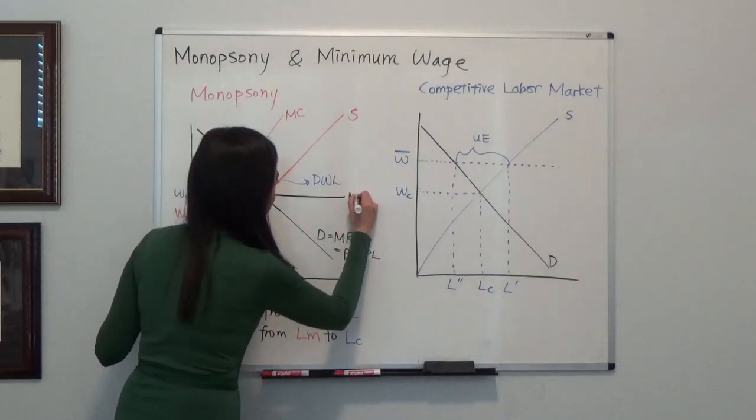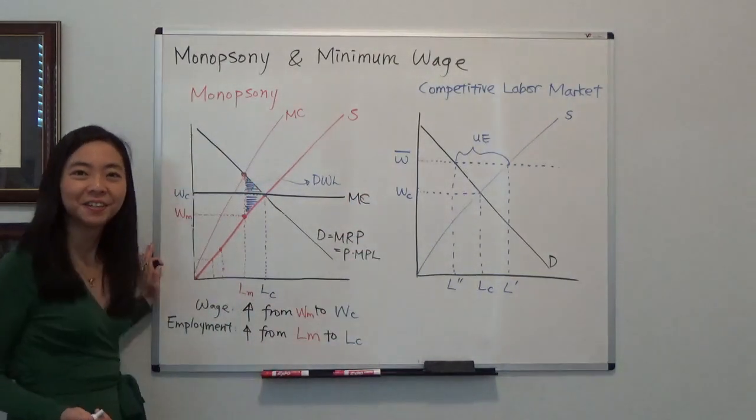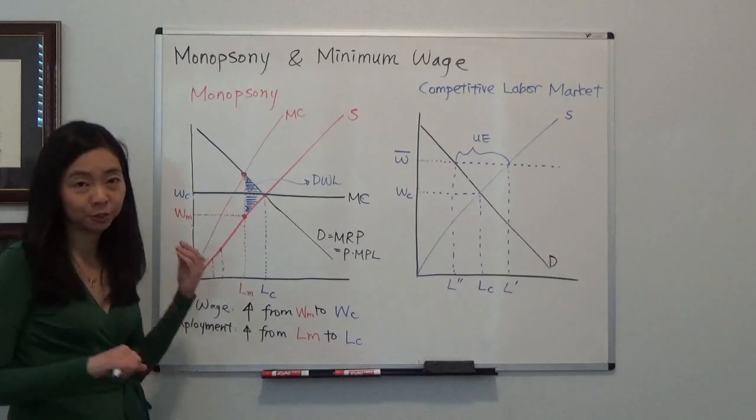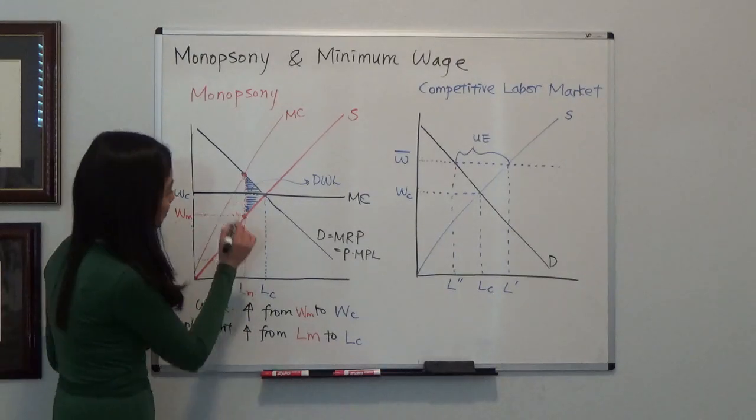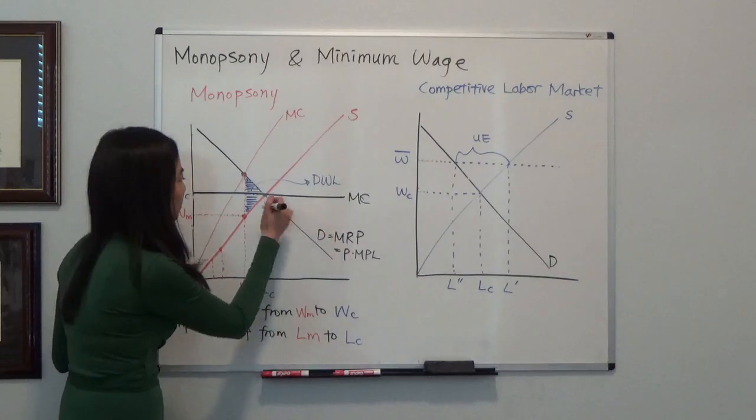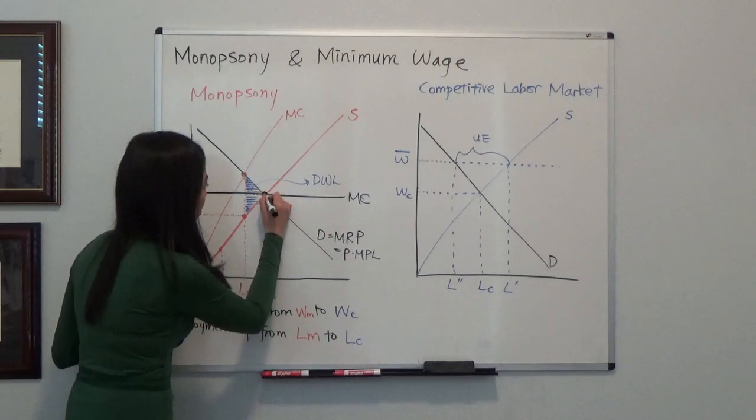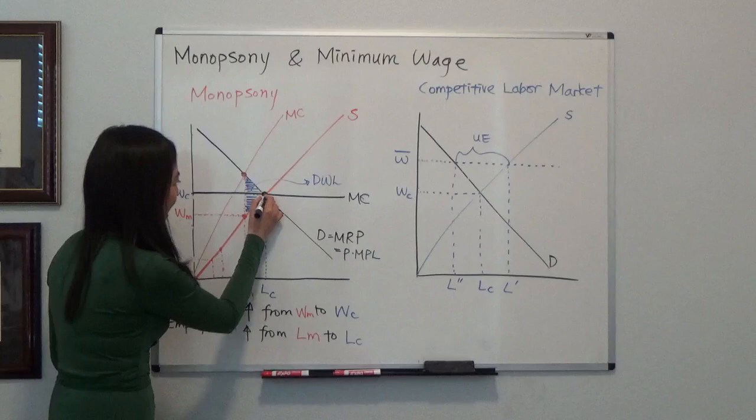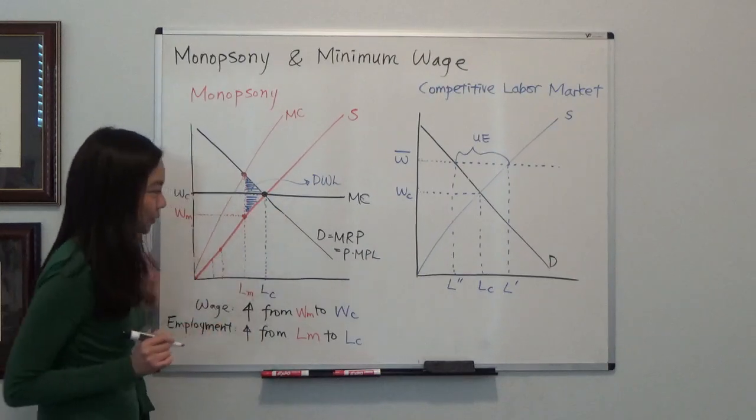Then that becomes the new marginal cost. And the monopsony will equate marginal cost and marginal benefit. So where is it? That's the demand, that's the marginal benefit, and that's the marginal cost. So we pay this and we hire this number of workers, LC.